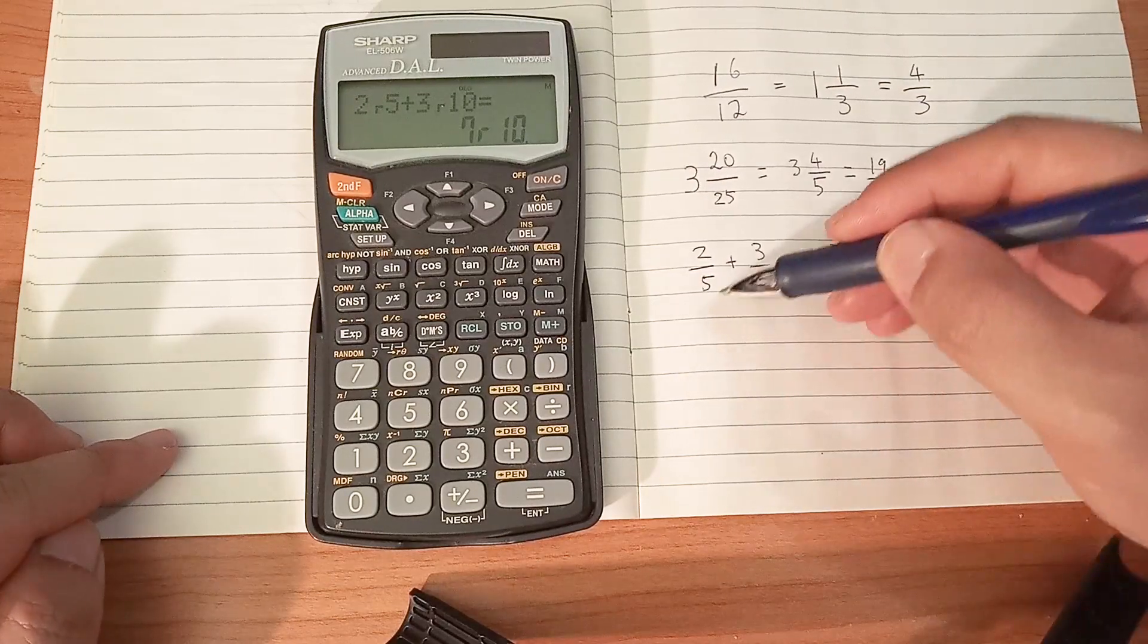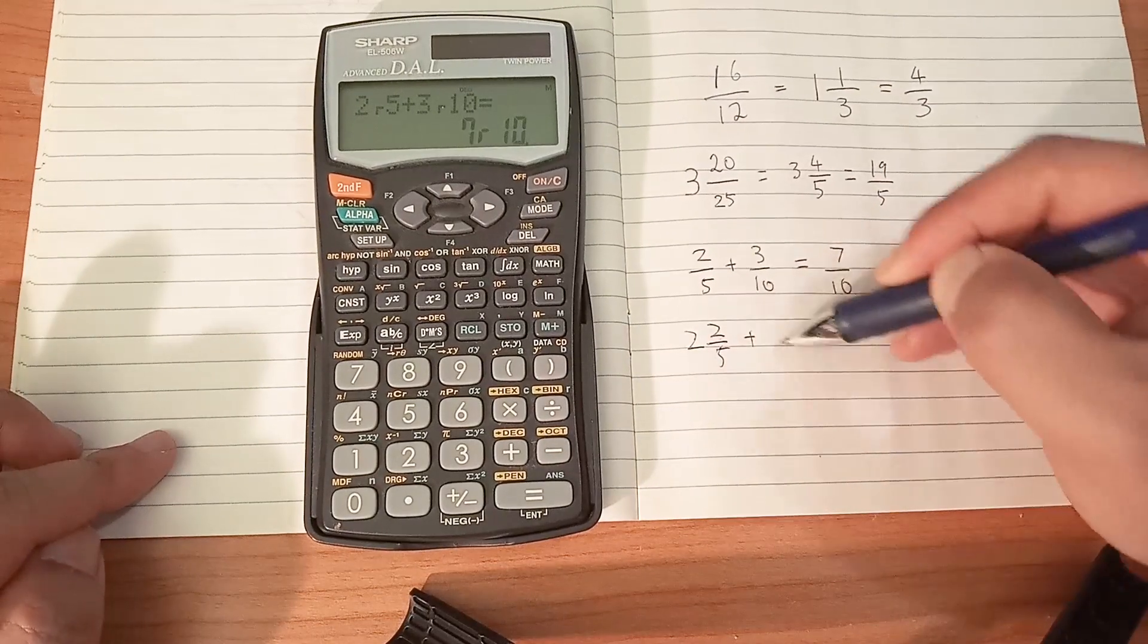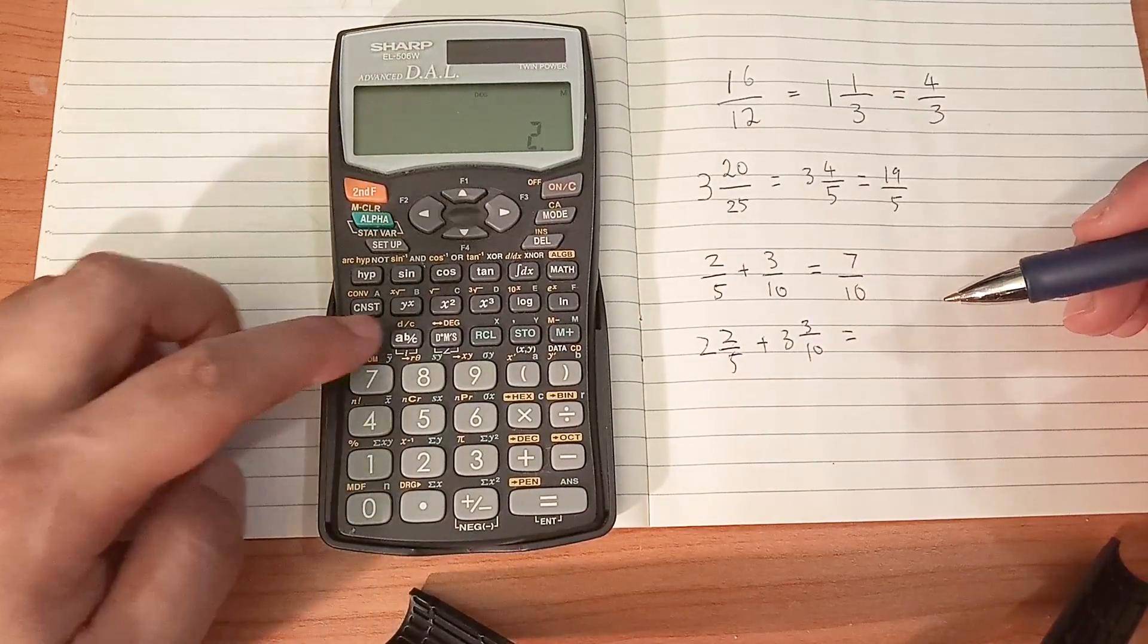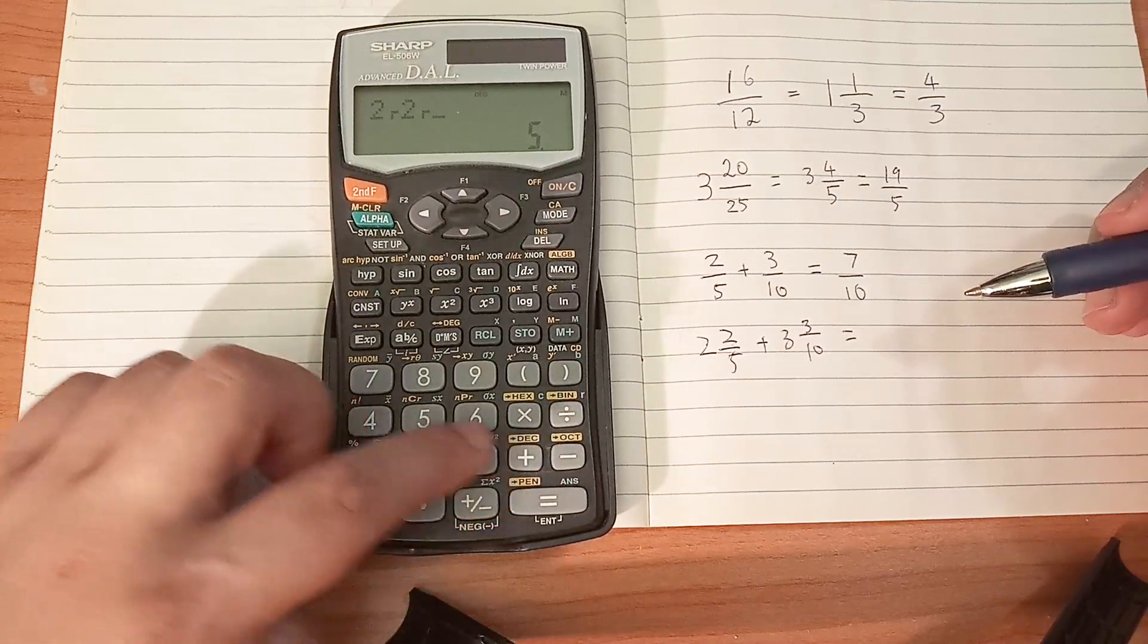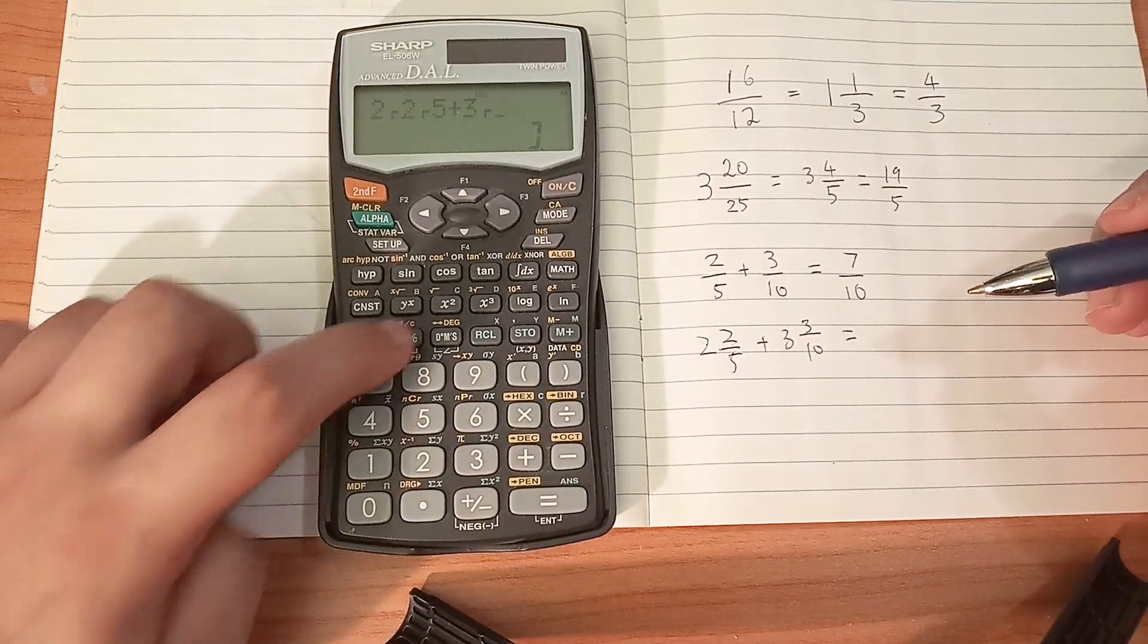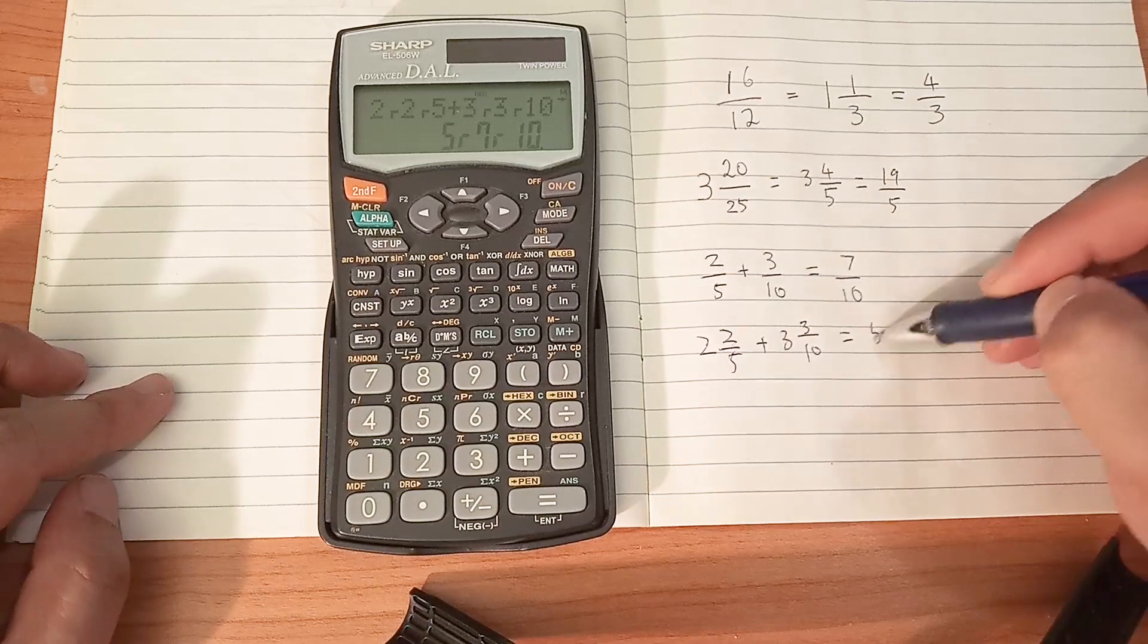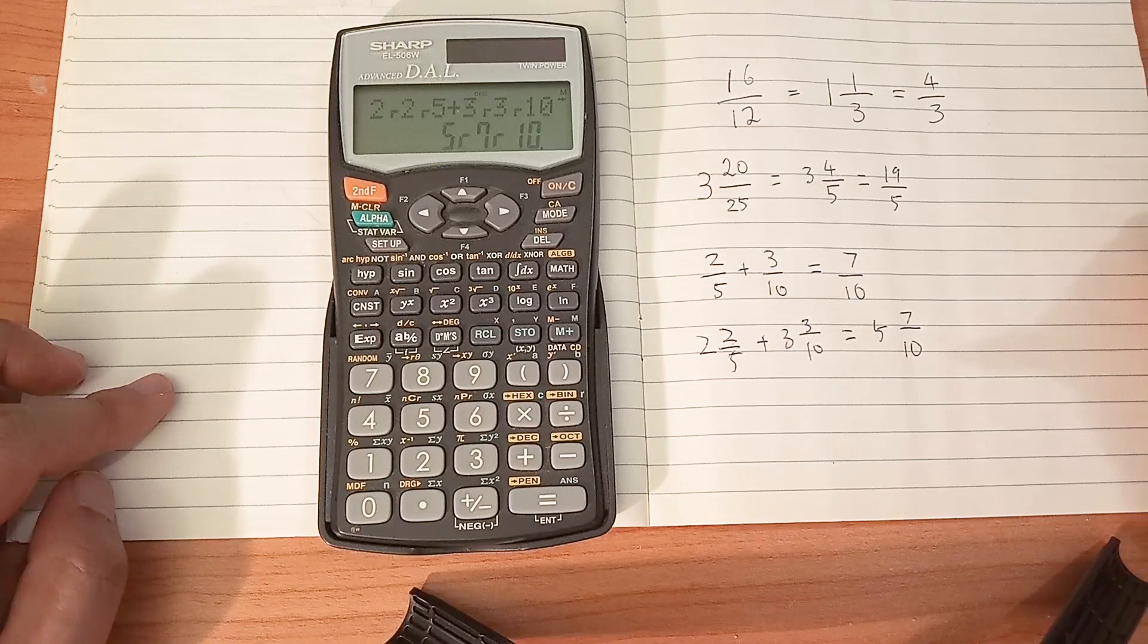If you want it in mixed number form, let's do 2 and 2 over 5 plus 3 and 3 over 10. So you just enter 2 and 2 over 5 plus 3 and 3 over 10, and it gives 5 and 7 over 10, which is again correct.